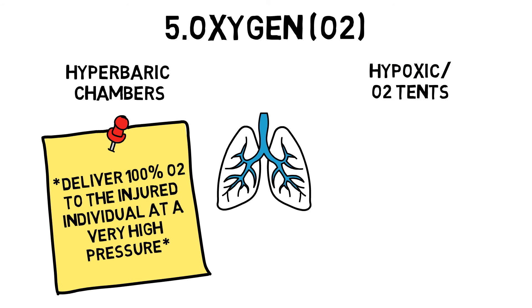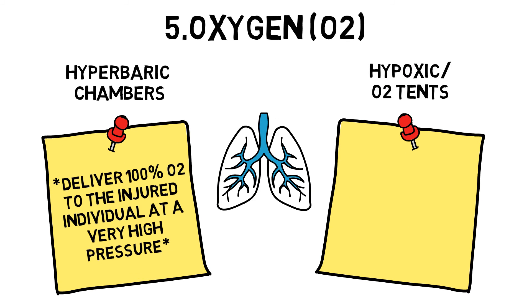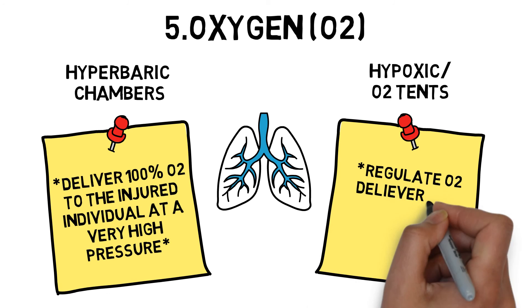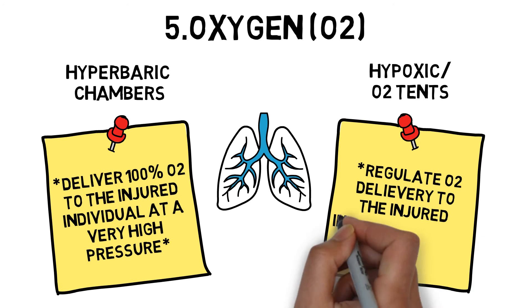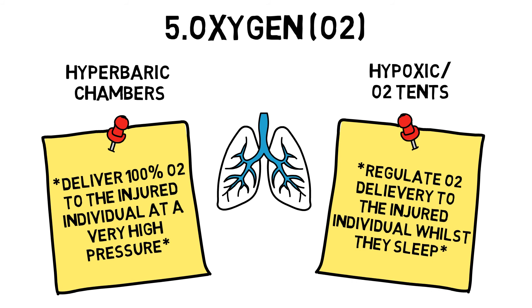Hypoxic, or oxygen, tents regulate oxygen delivery to the injured individual whilst they sleep. The body responds to low oxygen levels by increasing production of red blood cells. They do not aid recovery as such, but can preserve cardiovascular fitness of an athlete whilst they are injured or adjusting to altitude conditions.